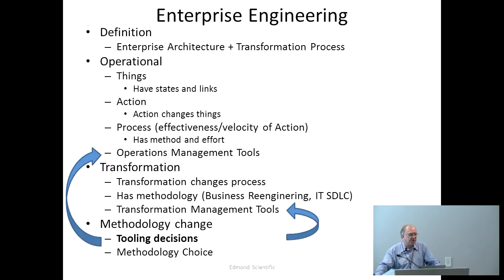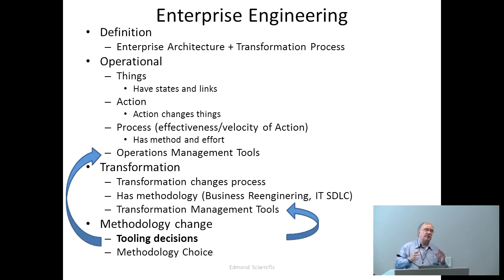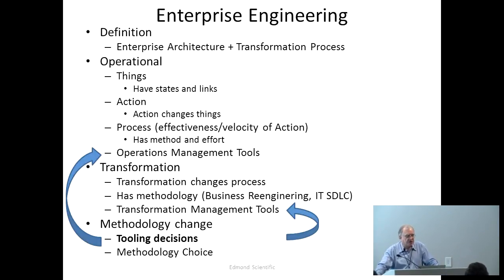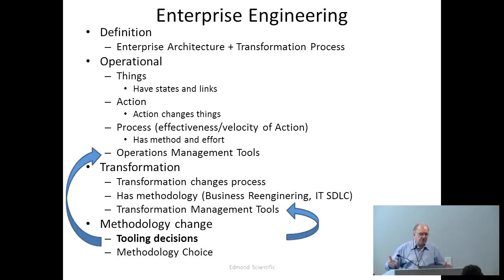There are two areas. One is an operational area — the things you have in the enterprise, the actions and processes, with operations management tools like manufacturing systems that manage the state of things. The transformation process changes the process, and you have methodologies such as business process re-engineering and the IT system development lifecycle. You have transformation management tools, and as part of methodology change you're going to make a tooling decision.